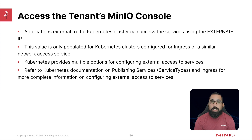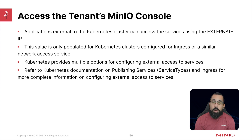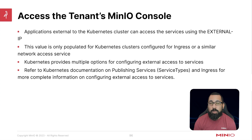To have external services access the tenant, you'll need to expose it externally using something like a load balancer, DNS name, or external service with an external IP. This value is only populated for Kubernetes clusters configured for ingress or similar network access services. In our lab we're going to configure an ingress to access our tenant. Kubernetes provides multiple options: ingress, load balancing, and port forwarding. Port forwarding is temporary, so you'll probably want to configure a load balancer or ingress instead. Refer to the Kubernetes documentation on publishing services and service types for more complete information.